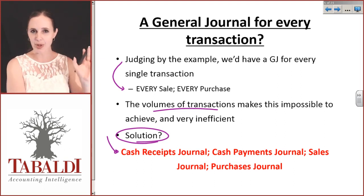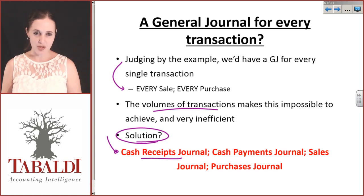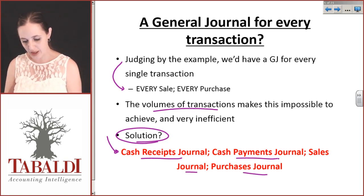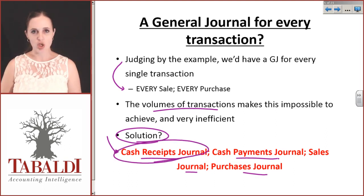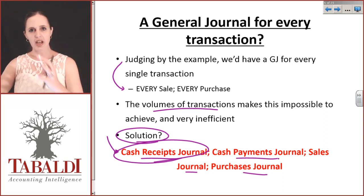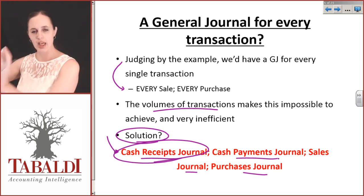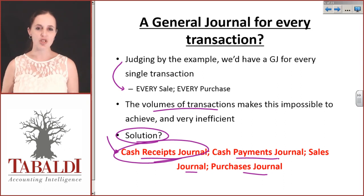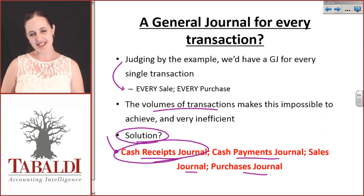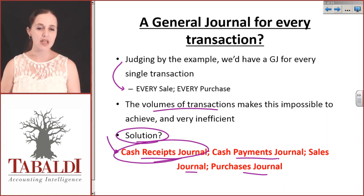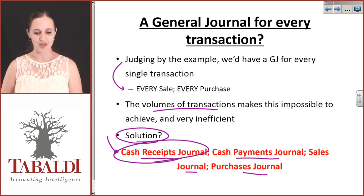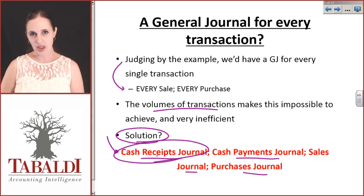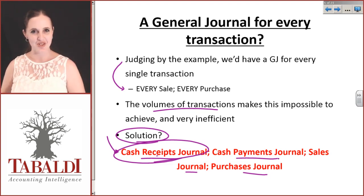Instead of dealing with them all separately, we deal with them together. That's where the CRJ — the cash receipts journal, the CPJ — the cash payments journal, the sales journal, and the purchases journal are born. The cash receipts journal means that instead of posting every single cash sale one by one, all cash sales go into one journal. All cash payments go into one journal. At the end of the month, instead of posting every single transaction, we just post the totals. So the general journal gives us an introduction into journals, and we find slightly more efficient ways to do this using the cash receipts, cash payments, sales, and purchases journals.